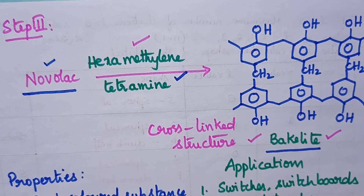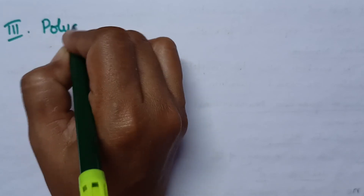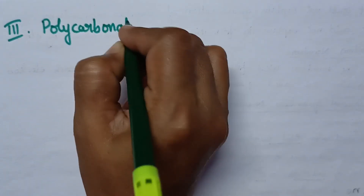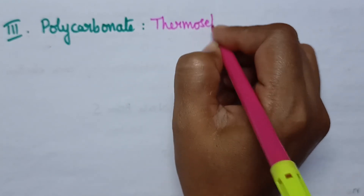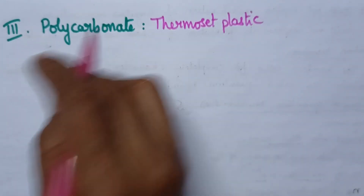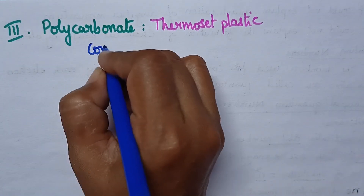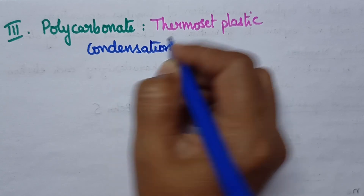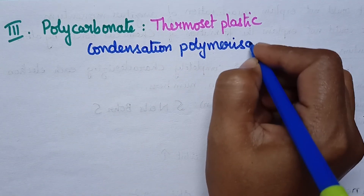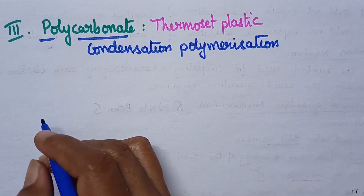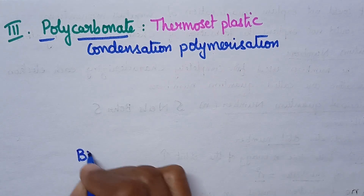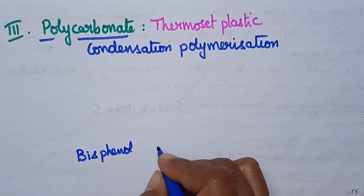Next, we will discuss about polycarbonate. The third individual plastic is polycarbonate. It is also a good example of thermoset plastic, and hence it can be prepared through condensation polymerization. Coming to the preparation of polycarbonate, it can be prepared by the reaction between bisphenol and phosgene.